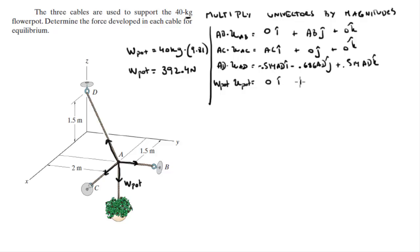And the weight of the pot is 0 on the i plus 0 on the j, and it's going straight down so it's minus 392.4 Newtons in the k.